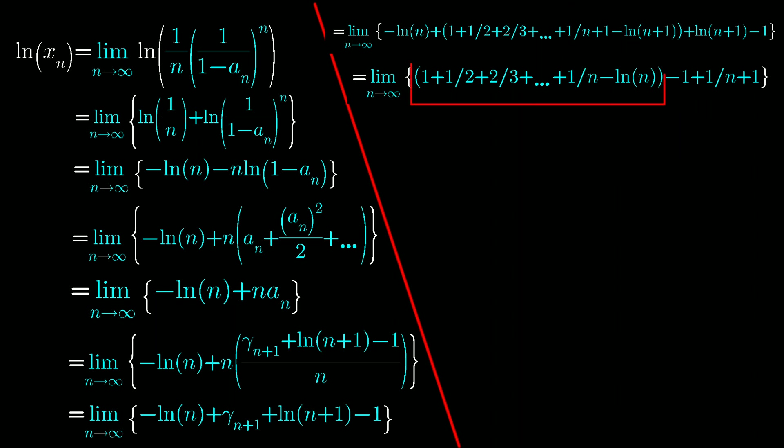Again we can write this series as gamma, and on putting limit in 1 upon n plus 1 term it becomes vanish.